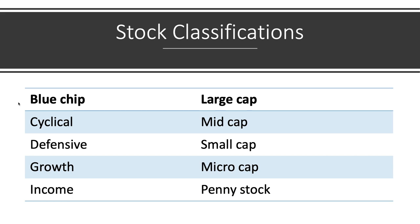When looking at stock classifications, there's Blue Chip — companies that have been around a long time. There's Large Cap — companies capitalized probably over $20 billion in assets. Then mid-cap, small-cap, micro-cap, very brand new companies coming out. There's also penny stocks that trade on different markets for under a dollar. And there's cyclical, defensive, growth, income — all sorts of classifications you might want to look at.